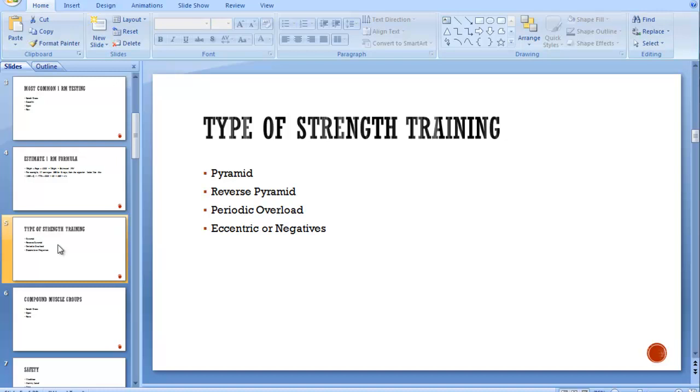Pyramid: you start off with your lightest weight first and build up, so you do several sets with your heaviest being last. Reverse pyramid is just the opposite where you start off with the heaviest amount that you can lift first and then go lighter and lighter until you can't go any more with your progressive sets after that.